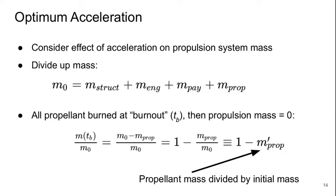So let's think about what the optimum amount of acceleration is by considering the effect that our choice of acceleration has on the mass of the propulsion system. Let's divide up the mass of our rocket. The total mass is M0, comprised of structural mass, engine mass, payload mass, and propellant mass.